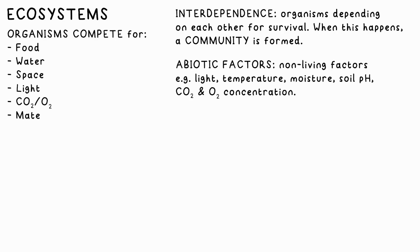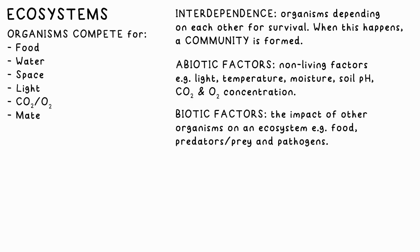Abiotic factors in an ecosystem are the non-living aspects — for example, light, temperature, moisture, soil pH, CO2, and O2 levels in the air. Biotic factors are due to organisms and things like food that's available, predators, prey, other organisms around, pathogens, and breeding behaviour.